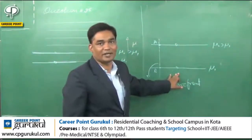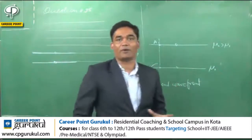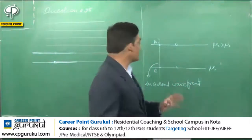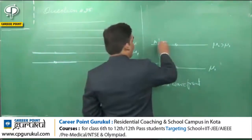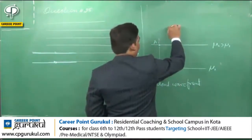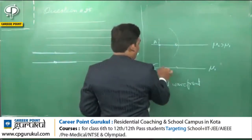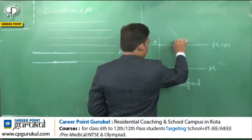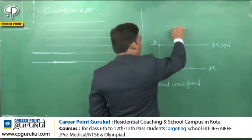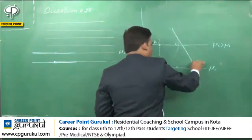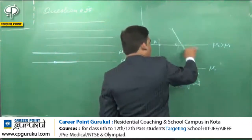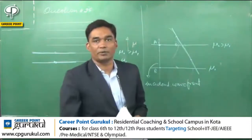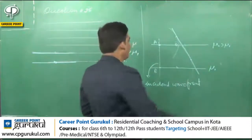In the mu1 medium, speed of light is greater. Therefore, the envelope or wavefront in this medium must be greater as compared to A. So we take a smaller arc for A and a greater arc for B. We then draw the secondary wavefront.